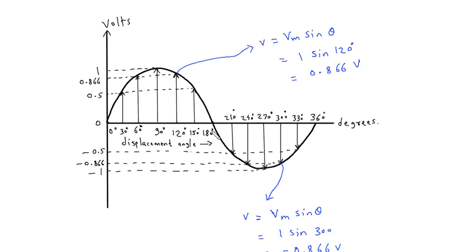Here we can see this is the sine wave, and these are the displacement angles. This is the voltage or volts. Here we are considering its peak voltage as 1 volt — this is the peak voltage of this sine wave. So at this instant, the displacement angle is 30 degrees, and the voltage at this instant is 0.5 volt.